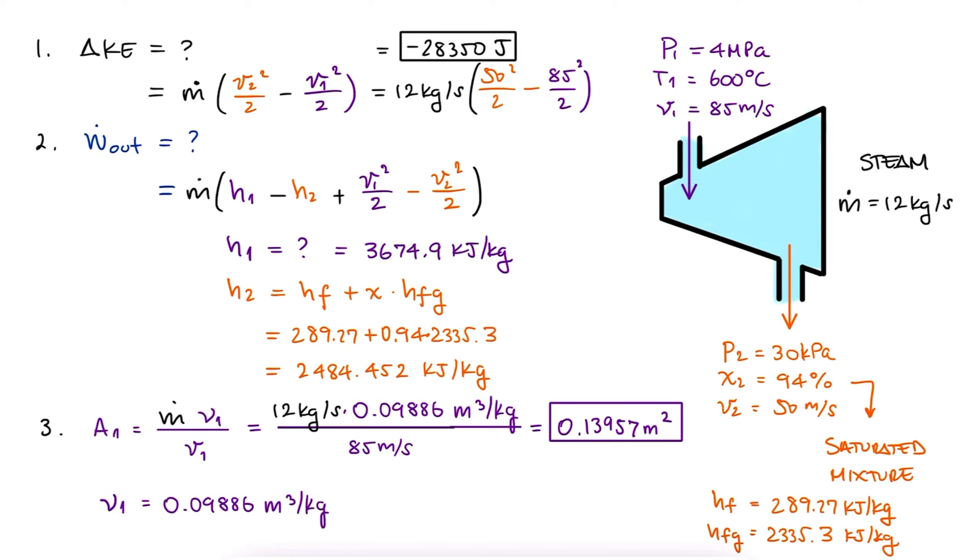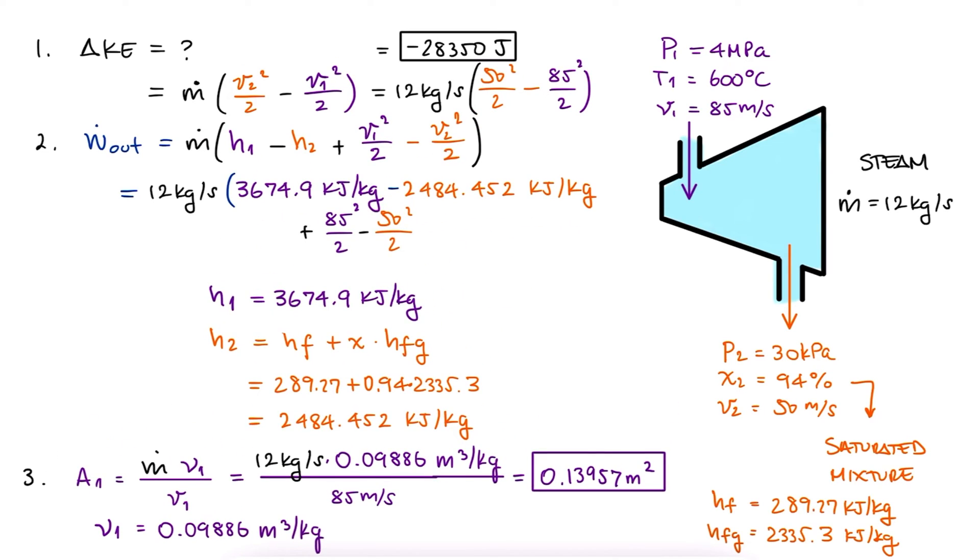That's the quality expression that we derived during the quality main lecture video, link below. We substitute these values in the work expression, correct for units, joules to kilojoules, and find that the power output is 14.31 megawatts.